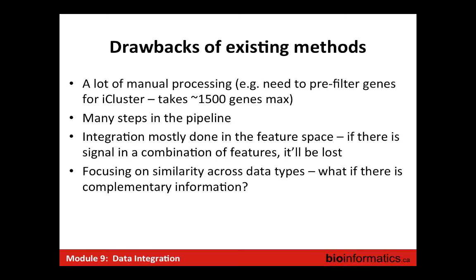Existing methods have several problems. Concatenation removes the structure of each individual data set, so findings may not be optimal. More sophisticated methods like Bayesian methods or iCluster have limits on the number of features they can handle, requiring pre-selection — but how do you know the most variable features are the ones really driving the cancer? There are also many preprocessing steps, making interpretation difficult. And combining different types of data such as dietary information with gene expression across different scales and contexts is a real challenge.